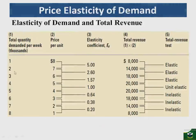Looking at the numerical examples: when price is 8, one unit is demanded; when price falls to 7, two units are demanded and elasticity is 5 — elastic. When price drops to 6, quantity demanded is 3 and elasticity is 2.6 — still elastic. At price 5, quantity is 4 and elasticity is 1.57 — still elastic. At price 4, quantity demanded is 5 and elasticity becomes 1, which is unit elastic. Beyond that, the elasticity coefficient falls into the inelastic region.